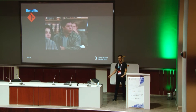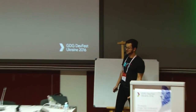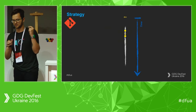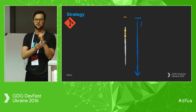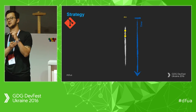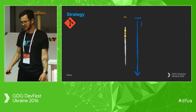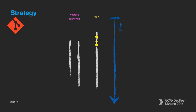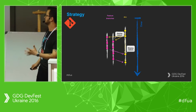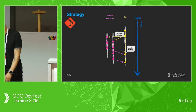Let's talk about Git strategies. How many of you use feature branches? Good. It's a pretty simple concept: every time you create a new feature, you have a development branch, and for every new feature you create a feature branch. You do development there, and after that you do the merge. The merge is the interesting part — that's where we use pull requests and other steps before merging.